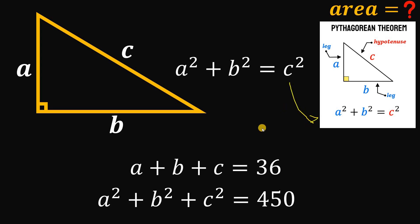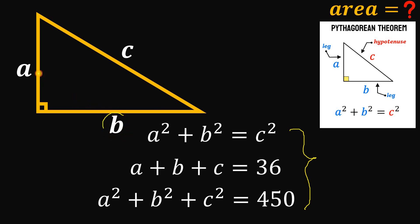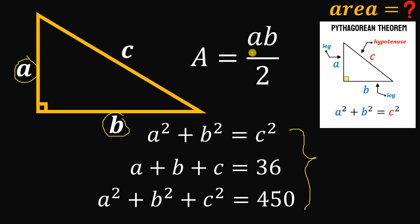So given these three equations, our goal is to find the area of this right triangle. The area of this triangle must be equal to one-half times base times height. We have the base B and the height A. Therefore, the area of this right triangle must be equal to A times B divided by 2.